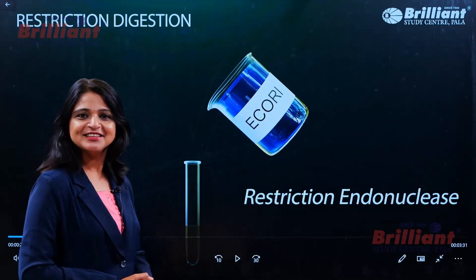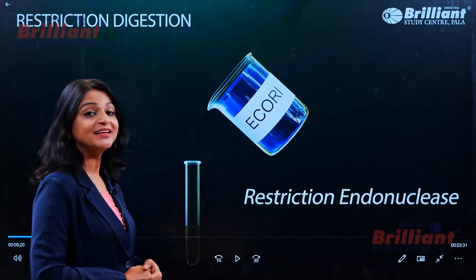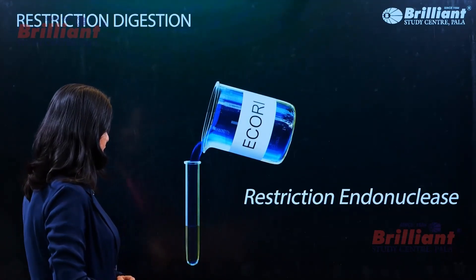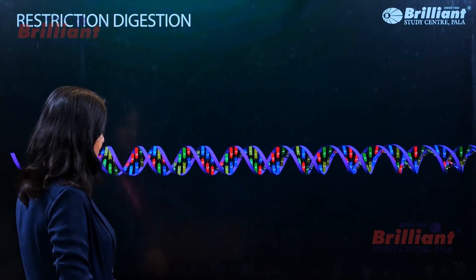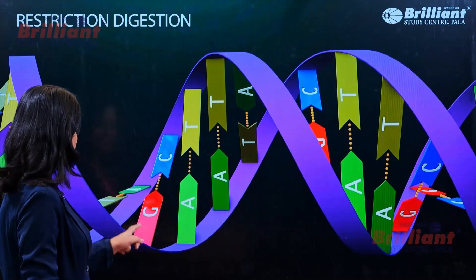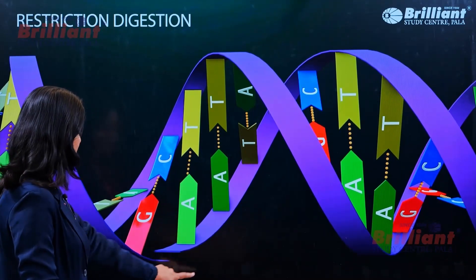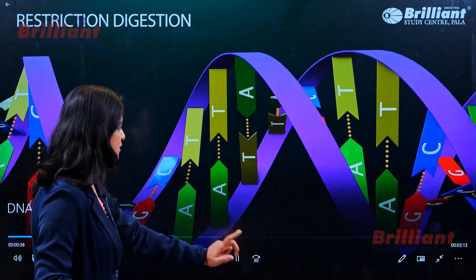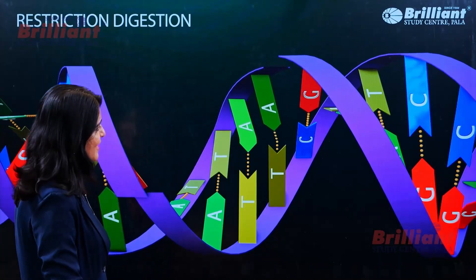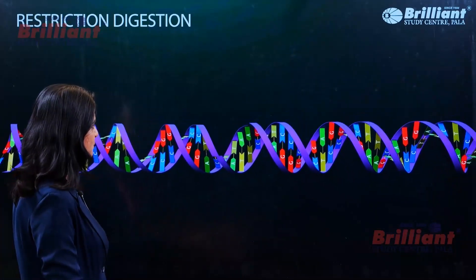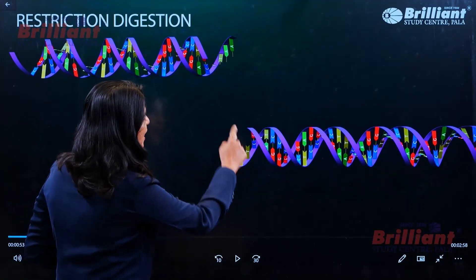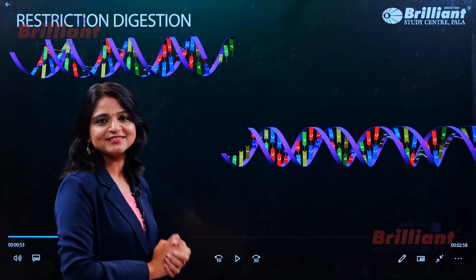I'm going to start restriction digestion. Here I'm applying EcoR1 — you know the cutting pattern and the process of how it cuts. Here you can see the band of DNA and the recognition site: the sequence GAATTC. See how EcoR1 cuts it. EcoR1 recognizes the bases guanine and adenine.